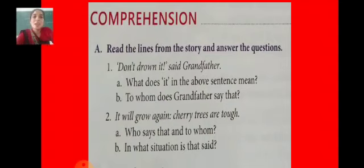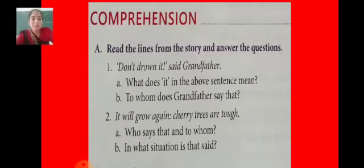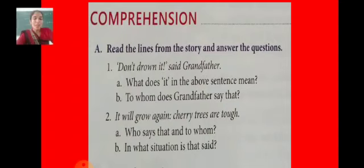Number 2: 'It will grow again. Cherry trees are tough.' A. Who says that to whom? Grandfather says that to Rakesh. B. In what situation is that said? That was a situation when the goat entered into the garden and ate up all the leaves and branches of the small cherry tree. Seeing that, Rakesh got upset. Grandfather consoles him by saying that.